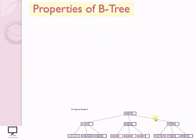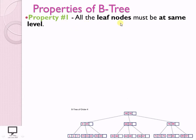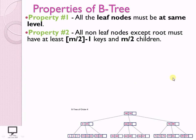Now let's move forward for all the properties. I am going to explain all the properties with this particular example. The first property is that all leaf nodes must be at the same level. We need to keep in mind all these properties for all operations. Here you can see that all the nodes are at the same level. Property 2 deals about non-leaf nodes that are not root nodes — how many minimum number of keys and children can be there. M is the order. Minimum keys must be ⌈M/2⌉ - 1 and minimum children must be ⌈M/2⌉.